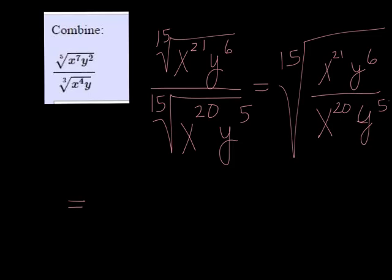So subtract the exponents, and we get the 15th root. Now 21 minus 20 is just 1, so we get x, and 6 minus 5 is also just 1, so the 15th root of x times y.